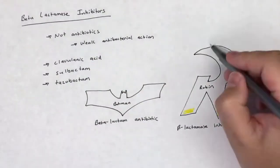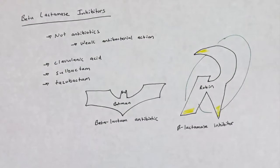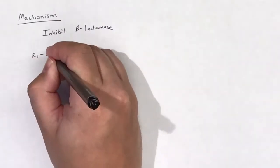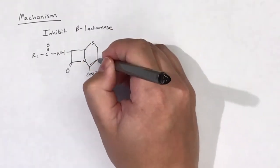The drugs in this class include clavulanic acid, sulbactam, and tazobactam. Beta-lactamase inhibitors, like the name implies, inhibit beta-lactamase.